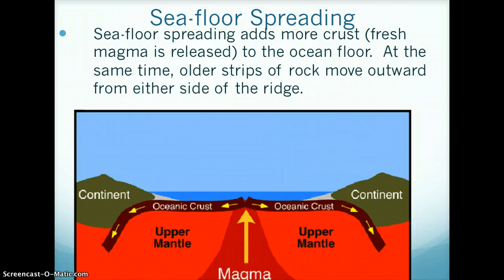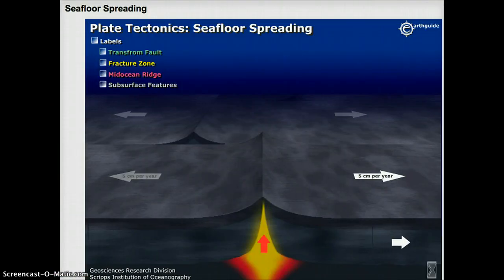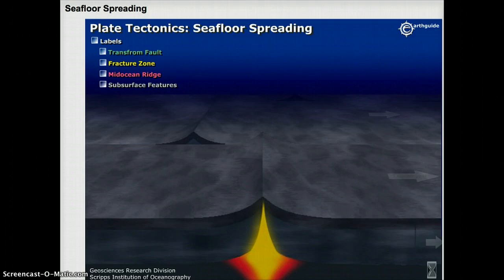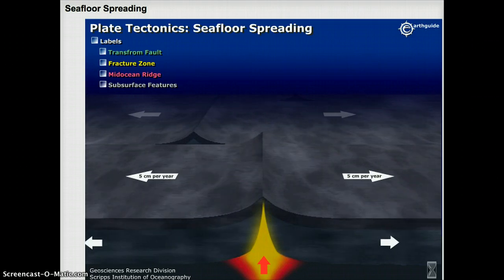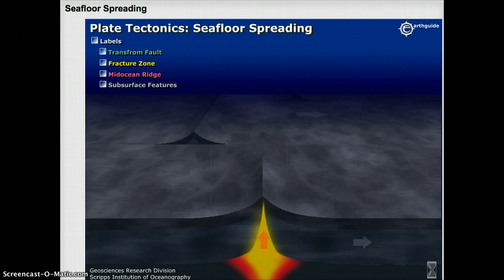Since the continents are moving because of convection currents, seafloor spreading occurs. Seafloor spreading adds more crust to the ocean floor. New magma rises and hardens on the ocean floor. At the same time, older strips of rock move outward from either side of the ridge. This animation demonstrates seafloor spreading — the new magma rises to create new ocean floor as the plates move.